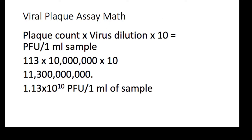Now, you might be wondering why we're multiplying by 10. That's because we want to figure out PFU, or plaque forming units, per one milliliter of sample. When we started this viral plaque assay process, we took a tenth of a mill out of the one mill sample.